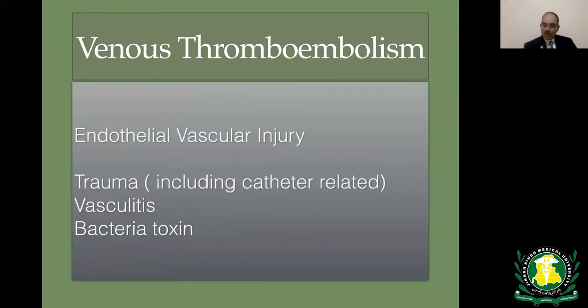Damage to vascular endothelium can result from trauma, vasculitis, bacterial toxins, and so on, which expose the subendothelial connective tissue that is highly thrombogenic.